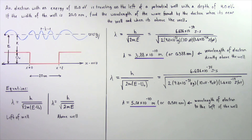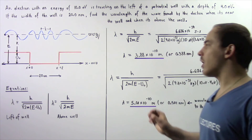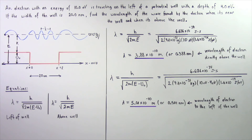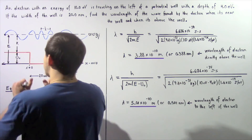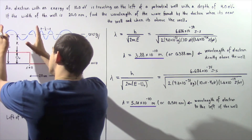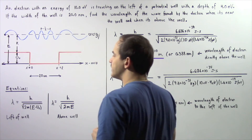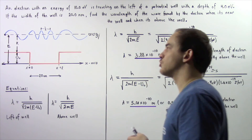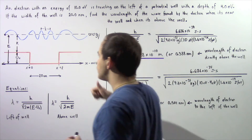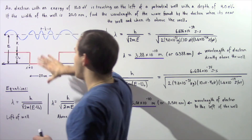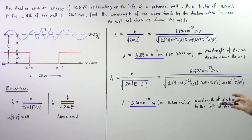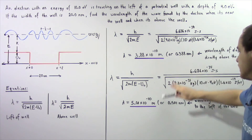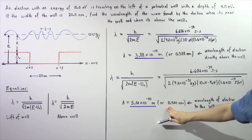This represents the wavelength of the electron when found to the left of our potential well. As the electron travels in the left region of the diagram, its wavelength is greater than when that electron is traveling directly above the potential well, as seen by comparing the two calculated values: 0.501 nanometers versus 0.388 nanometers.